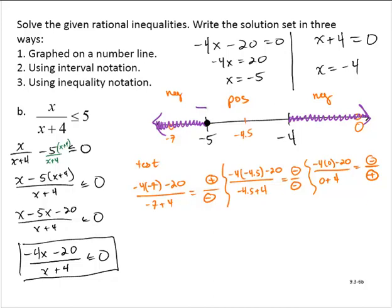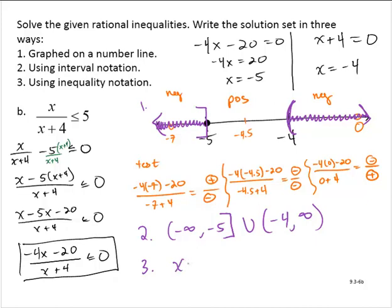I can include the negative 5 but must exclude the negative 4. In interval notation: negative infinity to negative 5 with a bracket on negative 5, union, parenthesis negative 4 to infinity. In inequality notation: the first interval is x is less than or equal to negative 5, or x is greater than negative 4.